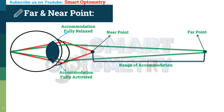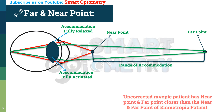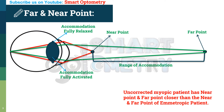The range of accommodation changes when we have myopia. An uncorrected myopic patient has a near point and far point closer than those of an emmetropic patient. Let's see how in the next slide.